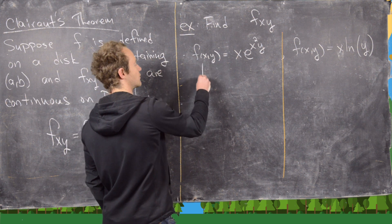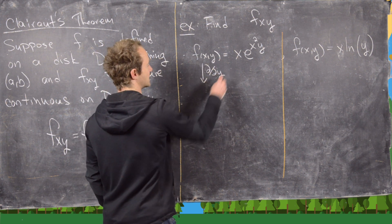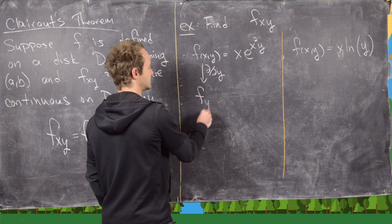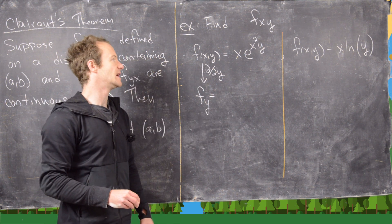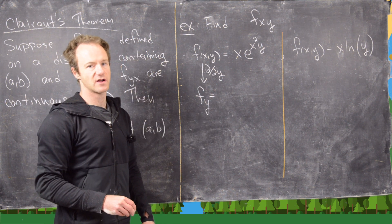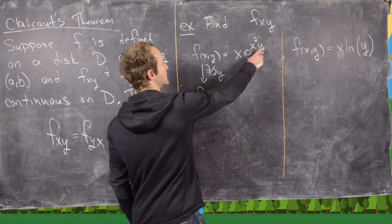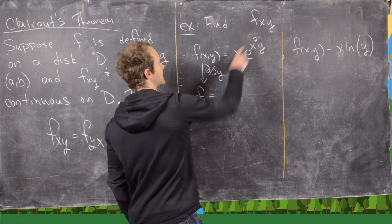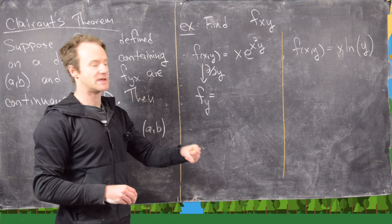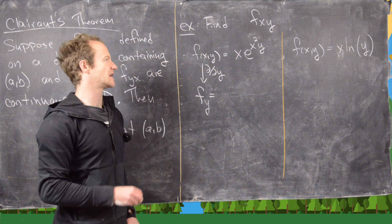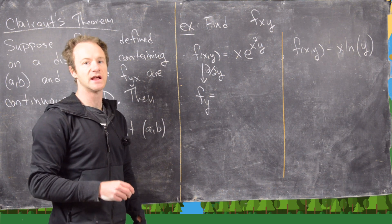So let's take the derivative with respect to y. For f_y, here x is a constant and y is a variable, so we use the chain rule. The derivative of e^(x²y) with respect to y is just x² times e^(x²y) again, because x² is a constant.